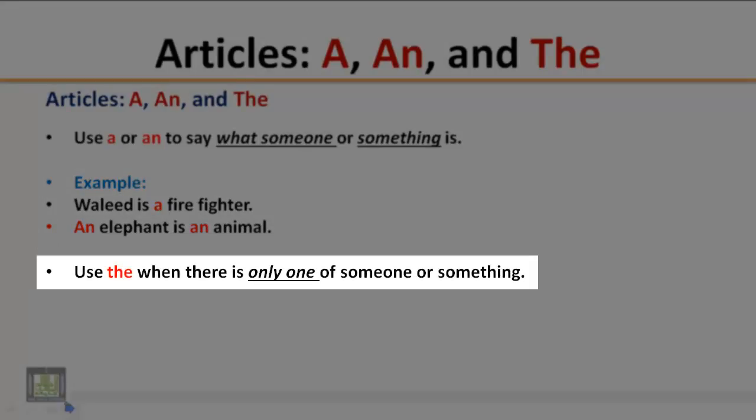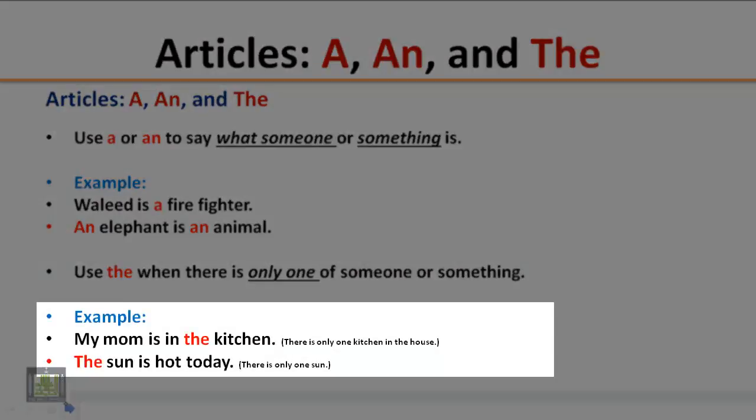Use The when there is only one of someone or something. Example: My mom is in the kitchen. There is only one kitchen in the house. The sun is hot today. There is only one sun.